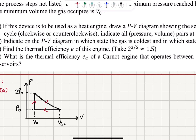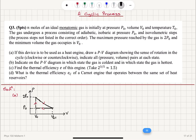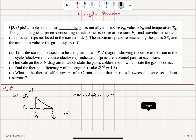What is the sense of rotation here? If you look at the work done on the gas: if you have a clockwise rotation, the right-hand rule tells you that your thumb should point into the board, which means it's a negative work done on the gas. That means work is being done by the gas — therefore, this will be a heat engine. So the correct answer is clockwise rotation, which makes sure that the work done on the gas is negative.